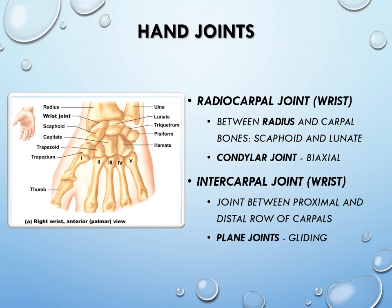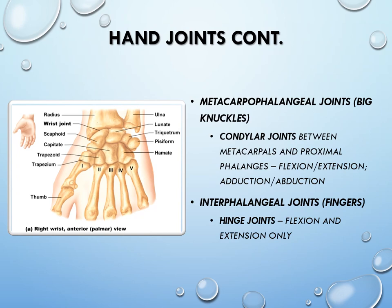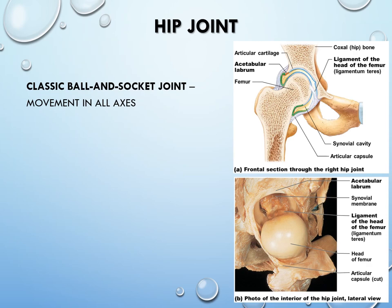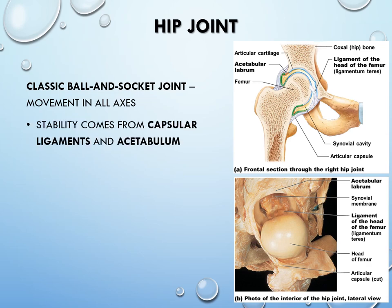The elbow is a very classic, straightforward hinge joint. The trochlea of the humerus and the ulna fit very nicely together. Tendons from the arm muscles also help stabilize it, but it is an inherently stable joint. The wrist has the radiocarpal joint — the radius articulating with the carpal bones, a condylar joint with two motions — and the intercarpal joints, which are plane joints that glide across each other. The metacarpophalangeal joints are condylar joints allowing flexion, extension, abduction, and adduction, while the interphalangeal joints are hinge joints allowing only flexion and extension.